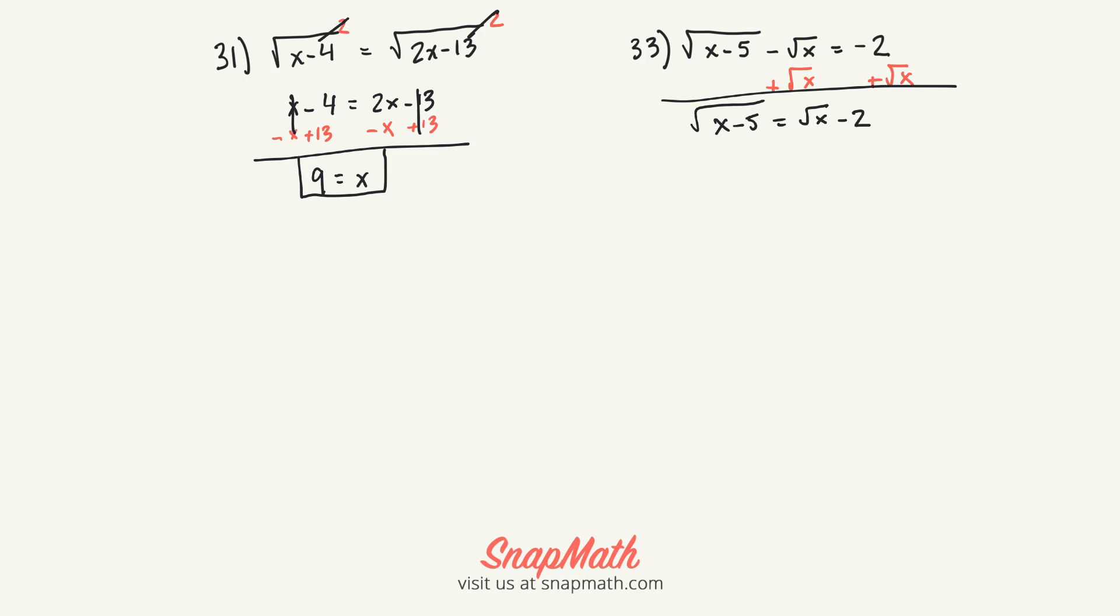Now this gets a little tricky. We're going to square both sides, but with this one we have to foil this right side out. The left side, the square cancels out the square root, so we're left with x minus 5 equals...